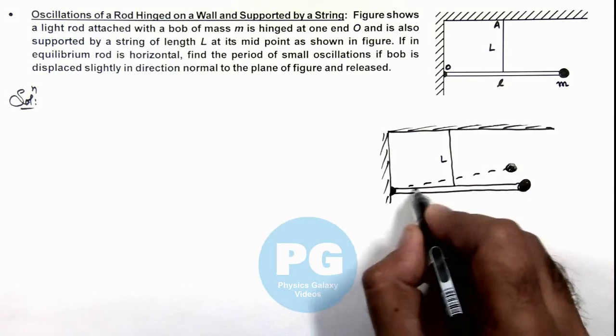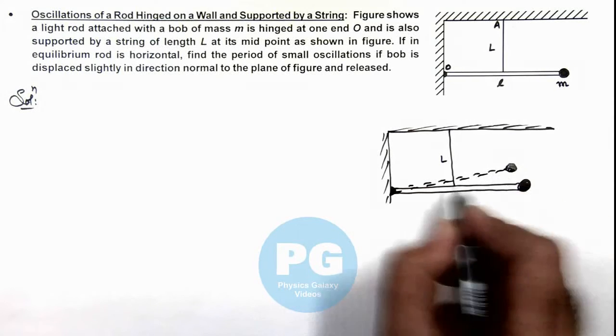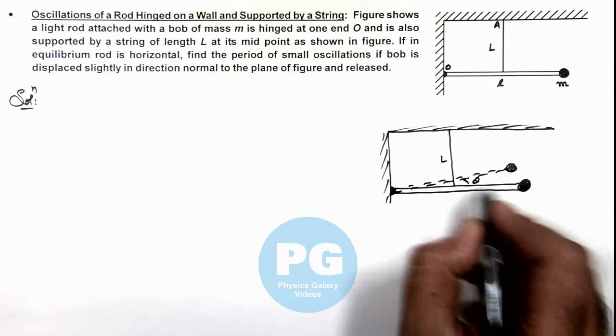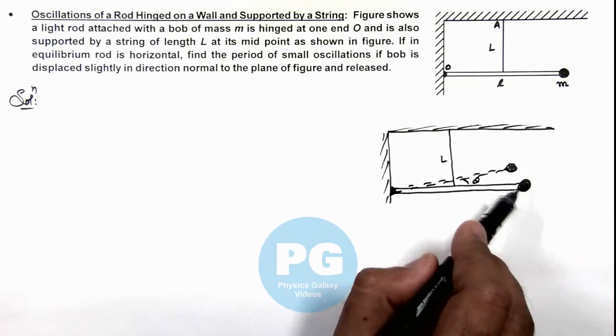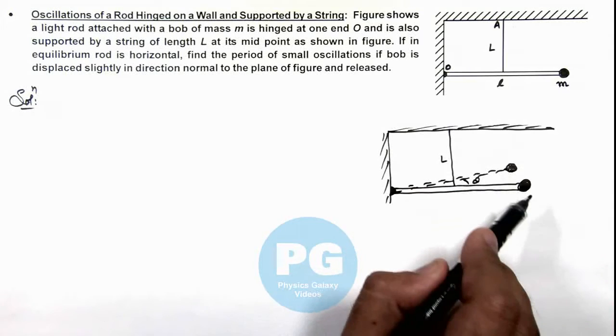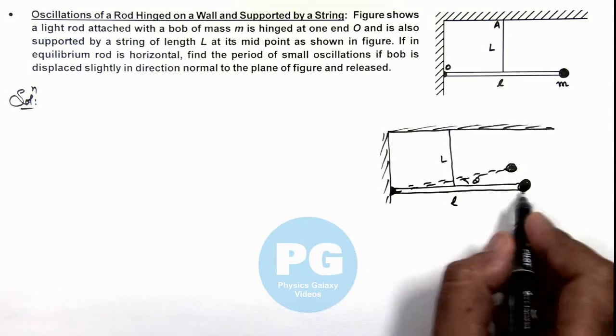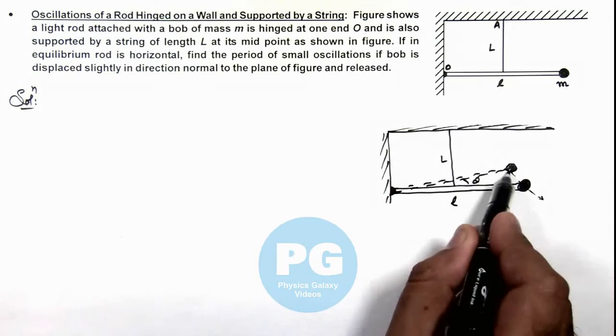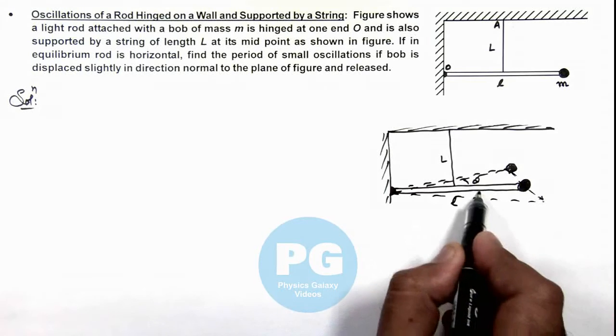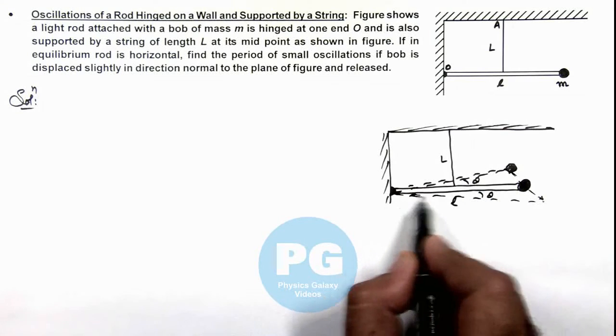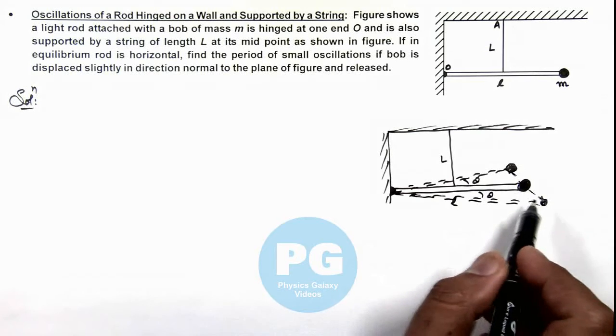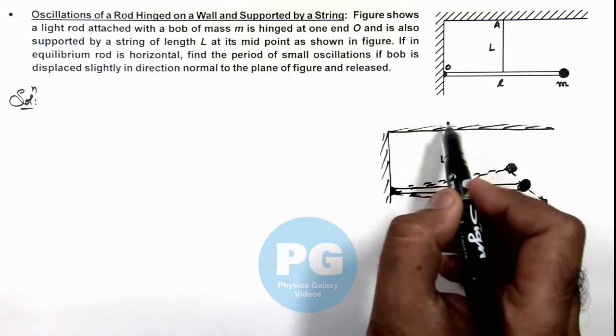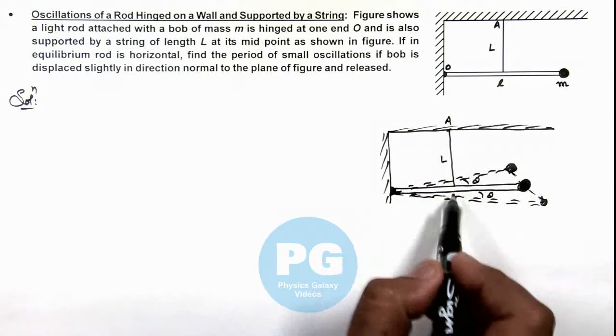You need to understand that here I have displaced the bob inside the plane of this figure by an angle theta. Then the bob will oscillate in this manner - inside, outside, inside, outside, and so on. The length of the light rod is L. When the bob is oscillating by angular amplitude theta, you can see the bob would be oscillating like a pendulum with suspension point at point A, from where the string is suspended.